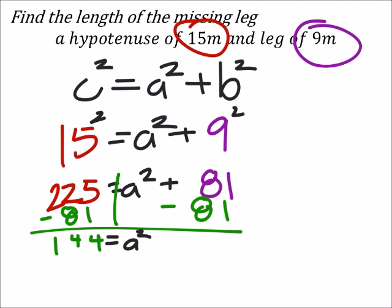Now if I wanted just a by itself, it's squared, so the inverse operation of a square is to square root. So I will square root both sides. The square root of a² is just a, and the square root of 144 is 12.